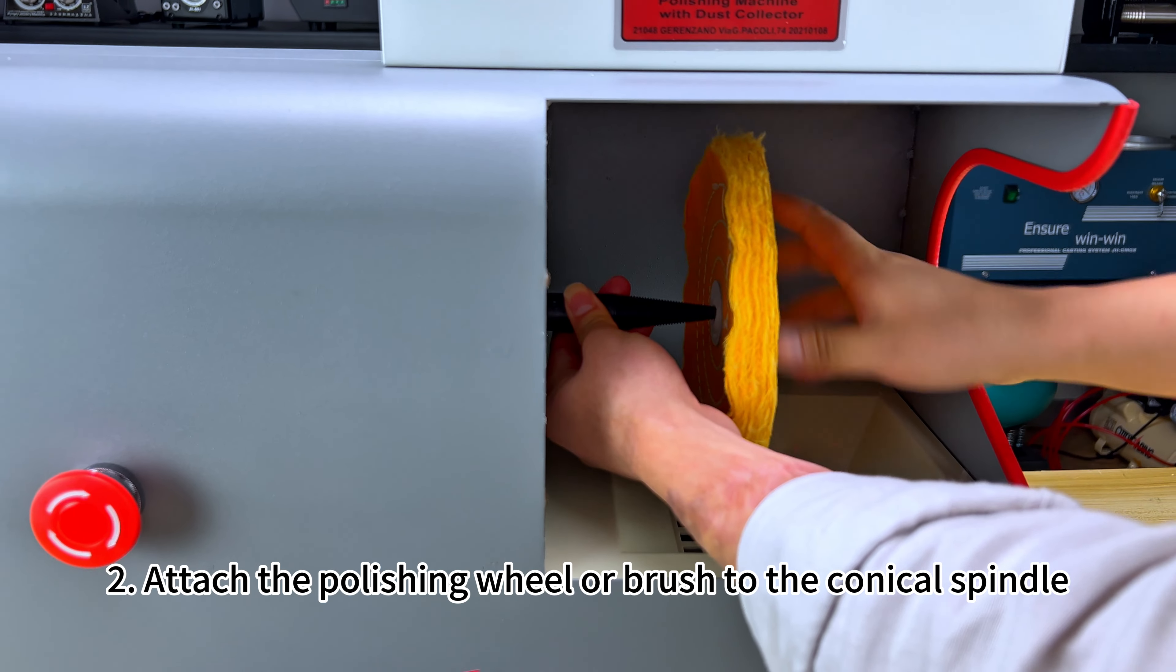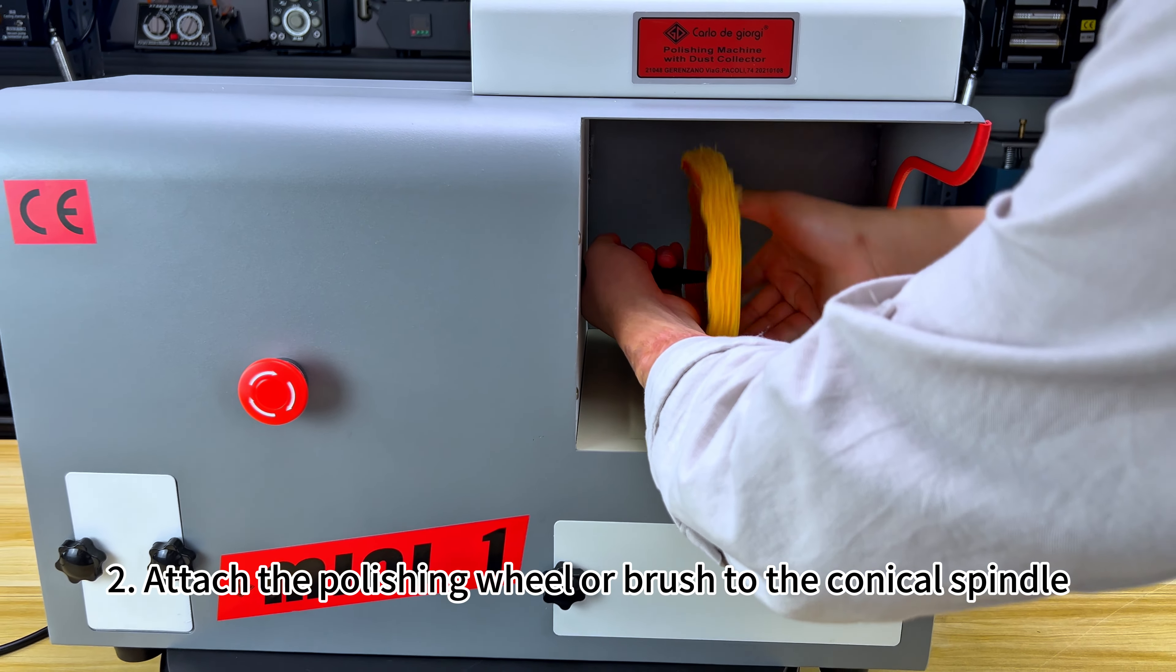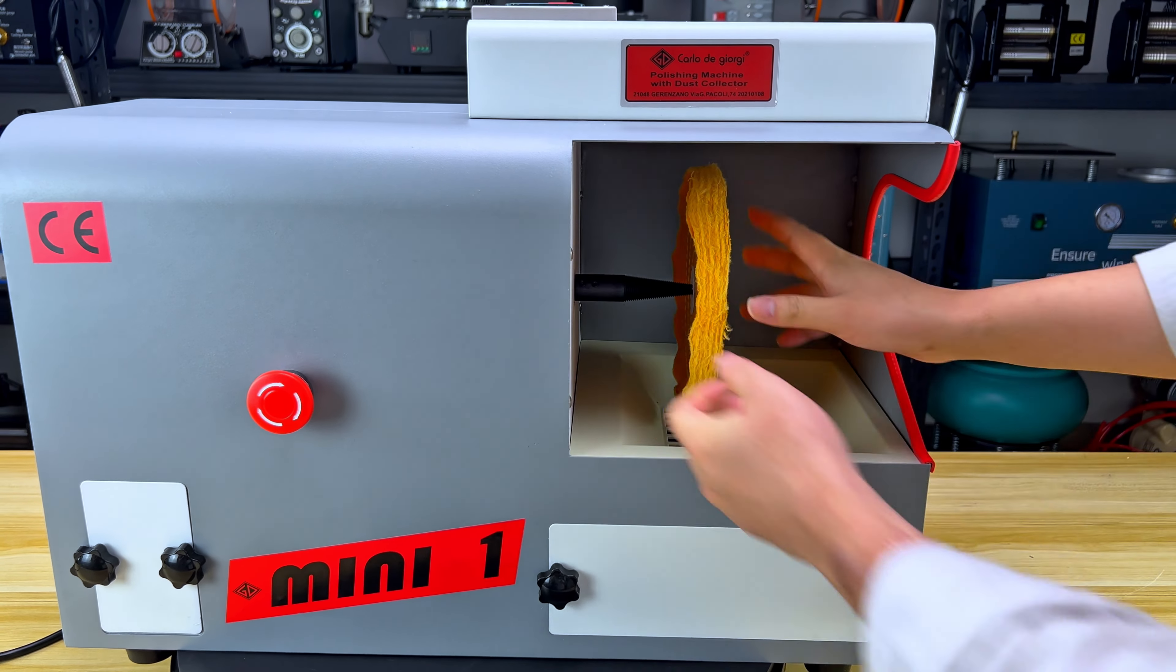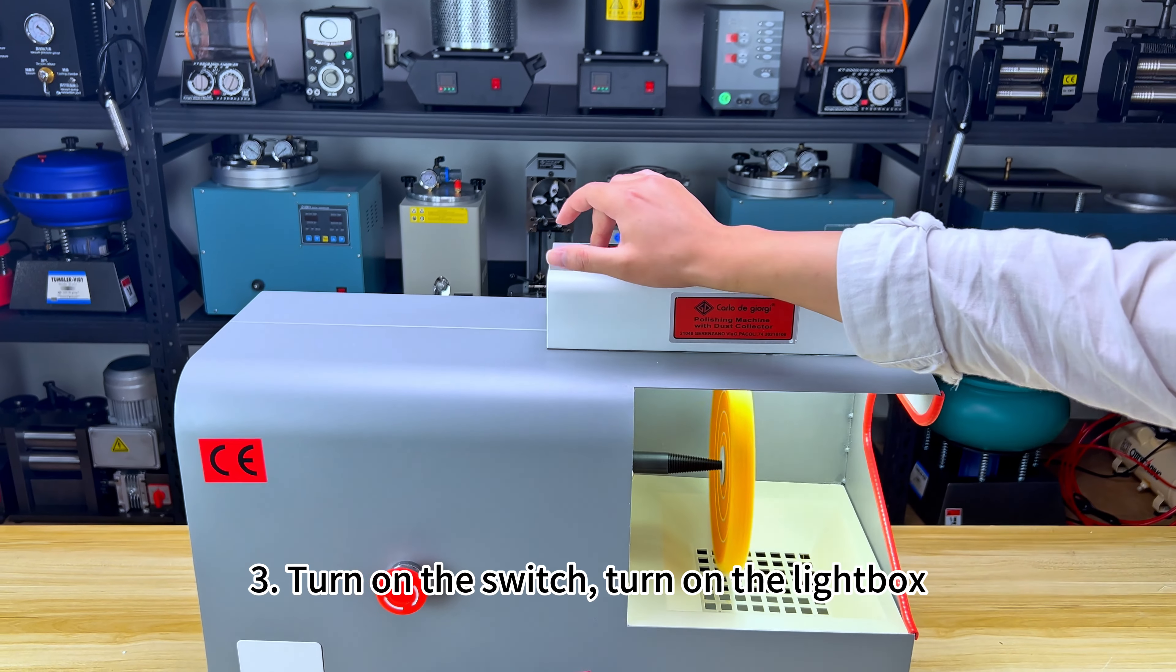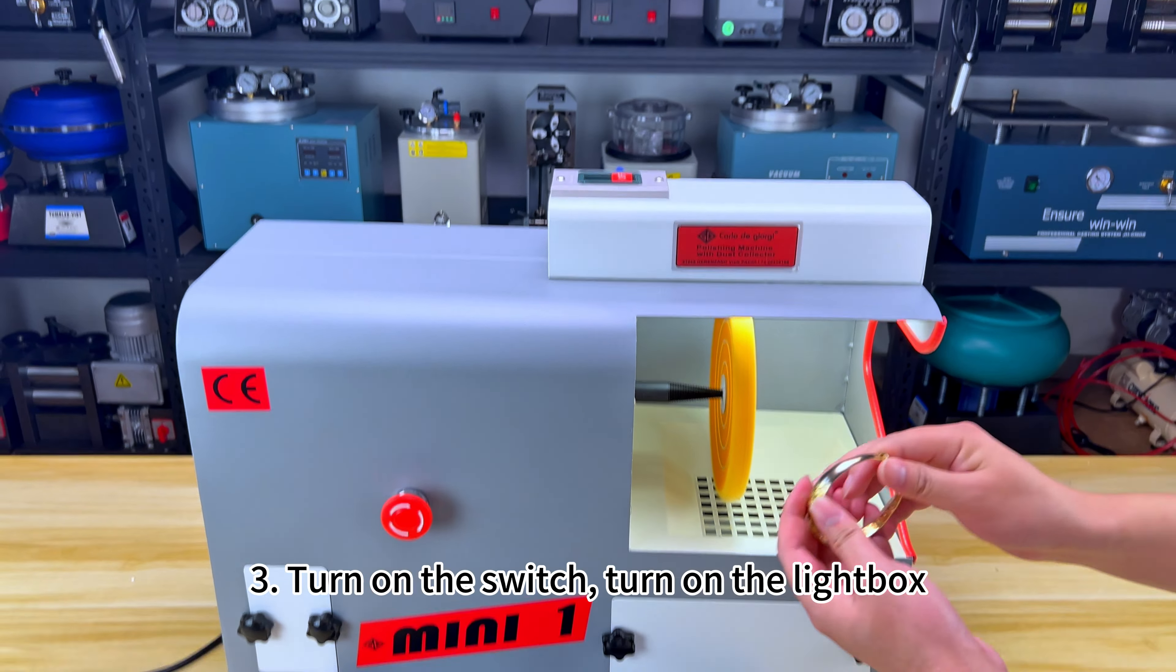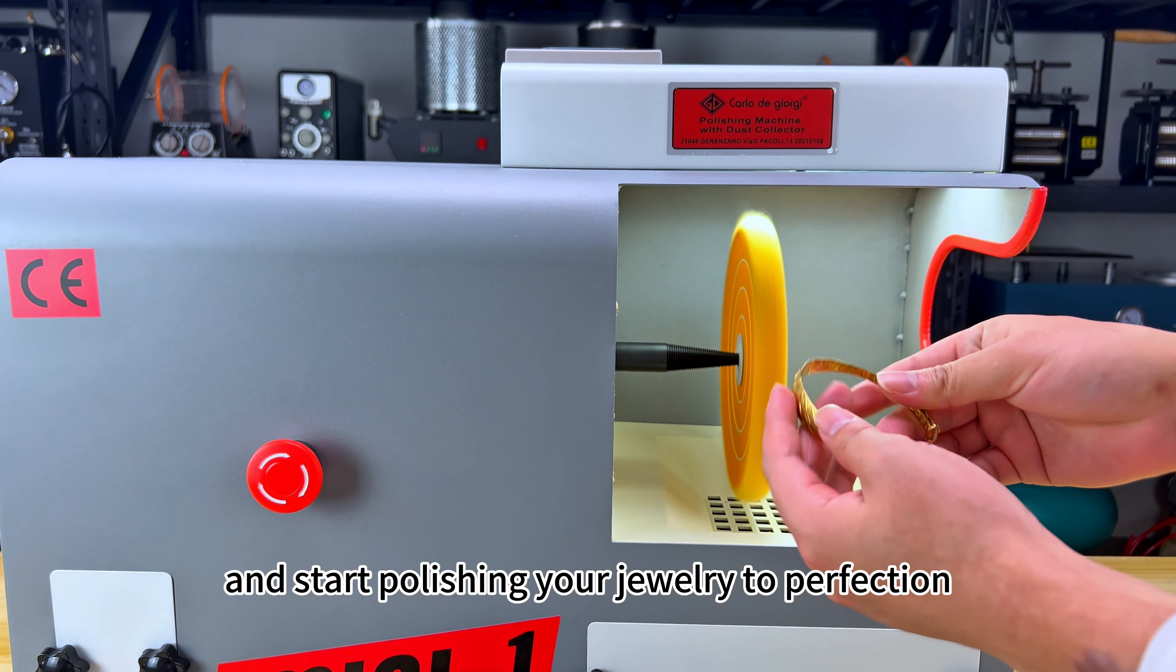Attach the polishing wheel or brush to the conical spindle. Turn on the switch, turn on the light box, and start polishing your jewelry to perfection.